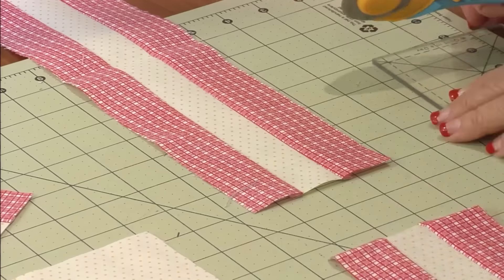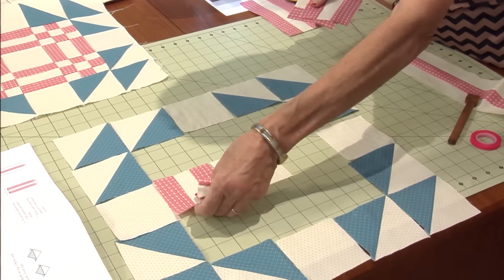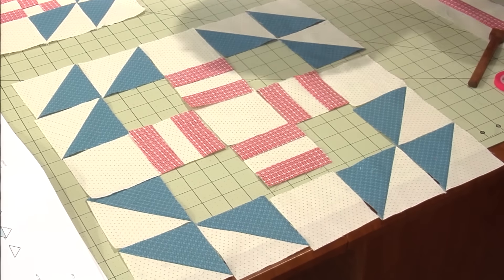Sew a set of strips together. Cut four with your three and a half fussy cut ruler and put those in place.